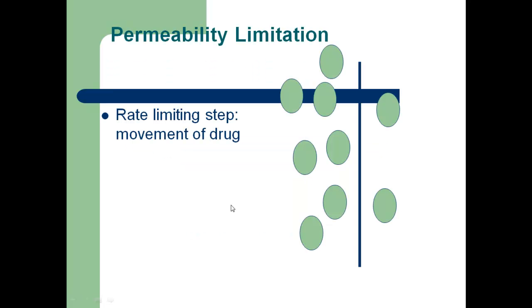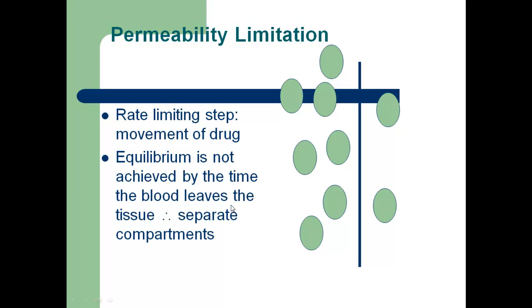Now for permeability, it's a little bit different. The rate limiting step is the movement of the drugs. The equilibrium is not achieved by the time the blood leaves the tissue because it has different separate compartments.